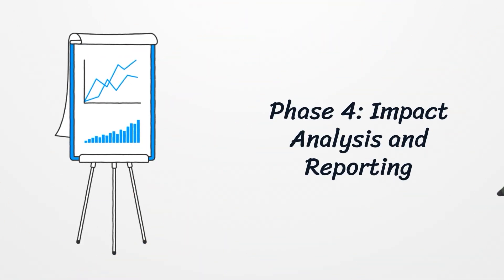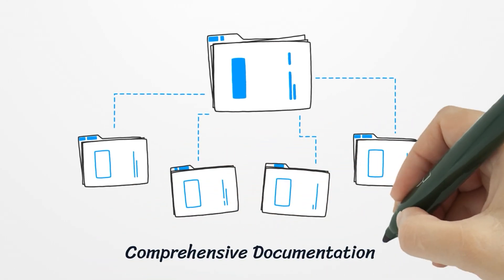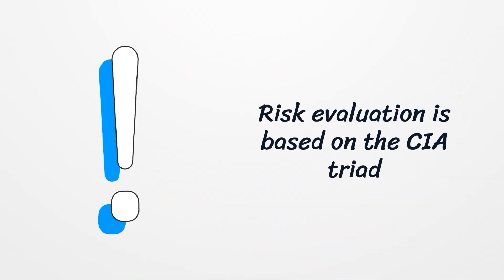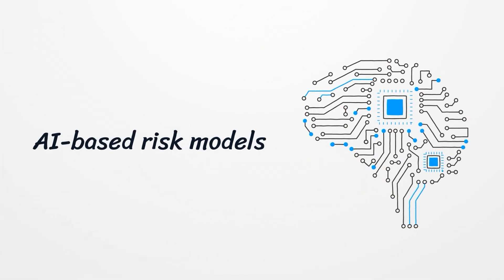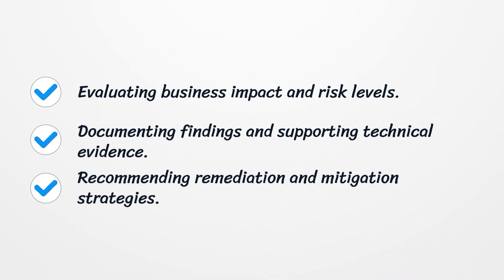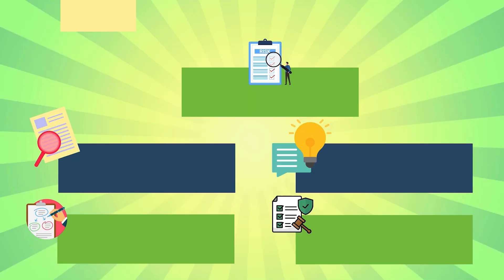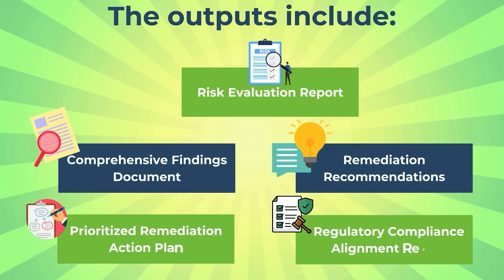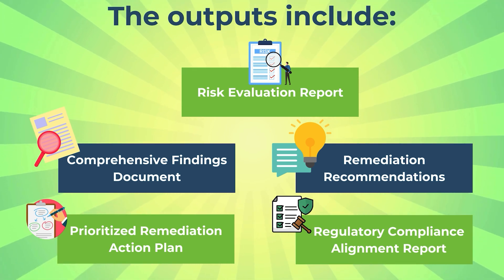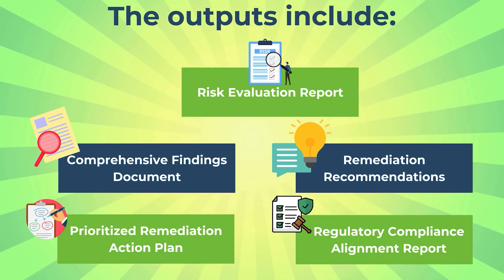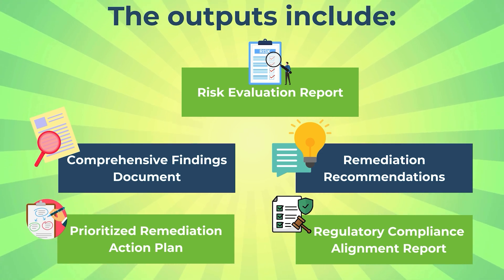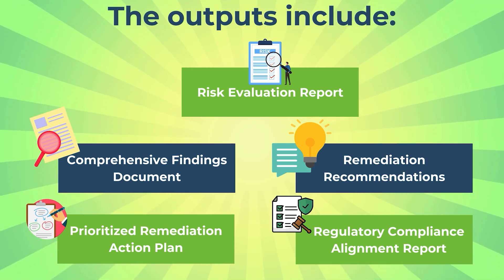Phase 4 is Impact Analysis and Reporting. We assess the impact of attacks against identified vulnerabilities and prepare comprehensive documentation to support mitigation. Risk evaluation is based on the CIA triad — confidentiality, integrity, and availability. AI-based risk models may be applied to assign risk levels, factoring in exploitability and current threat intelligence. Key activities include evaluating business impact and risk levels, documenting findings and supporting technical evidence, and recommending remediation and mitigation strategies. Outputs include a risk evaluation report, comprehensive findings document, remediation recommendations, prioritized remediation action plan, and regulatory compliance alignment report. The culminating output is the Recommendations and Remediation Roadmap (D6), detailing corrective actions prioritized by urgency.